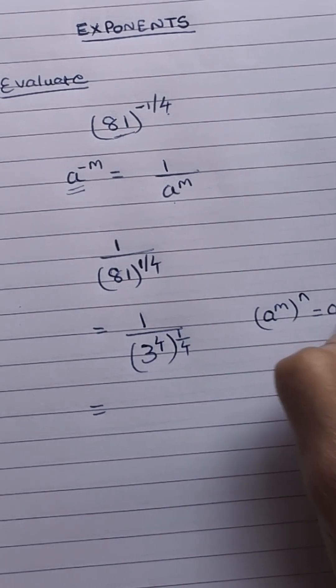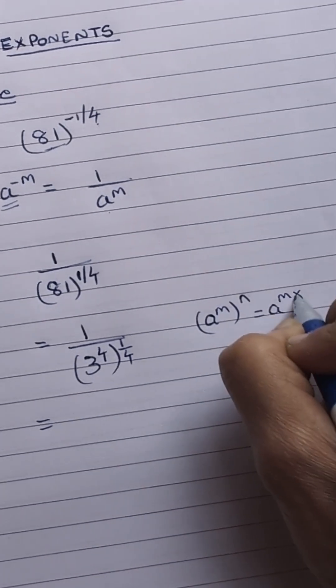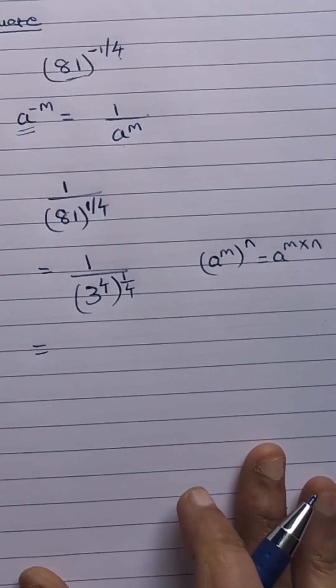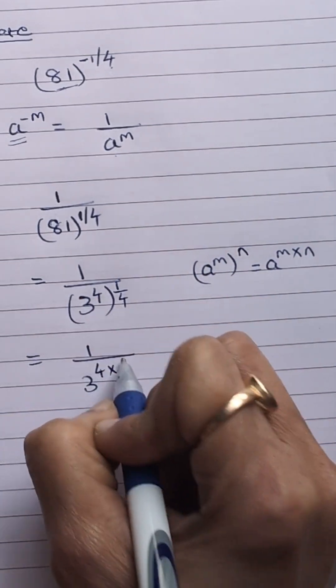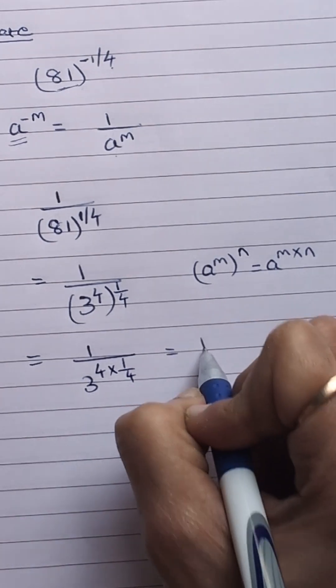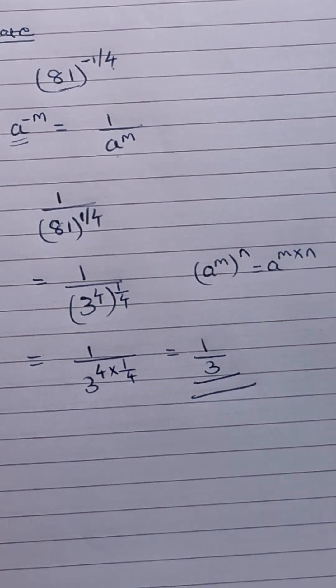Okay, so 3 to the power 4 whole to the power 1 upon 4 is 1 upon 3 to the power 4 into 1 upon 4, which is 1 upon 3. That is the final answer.